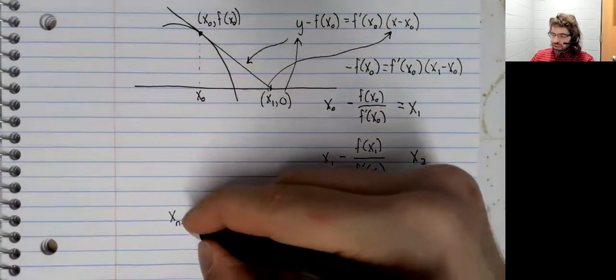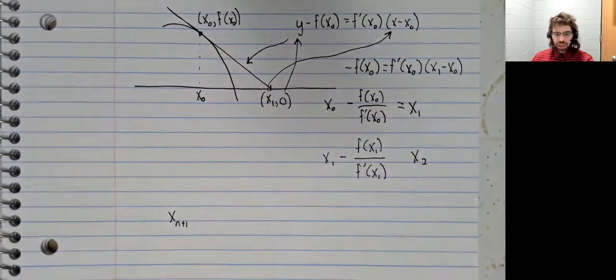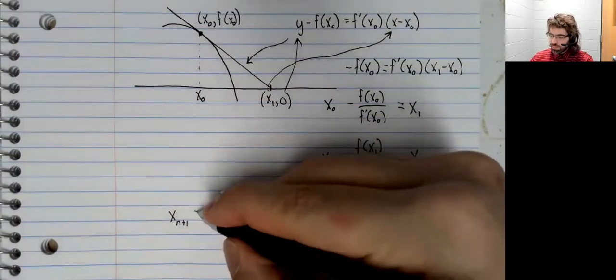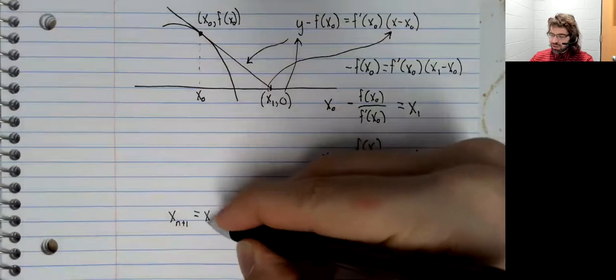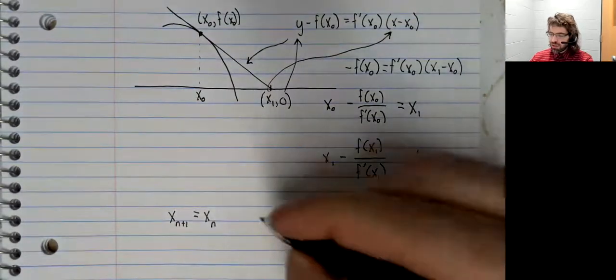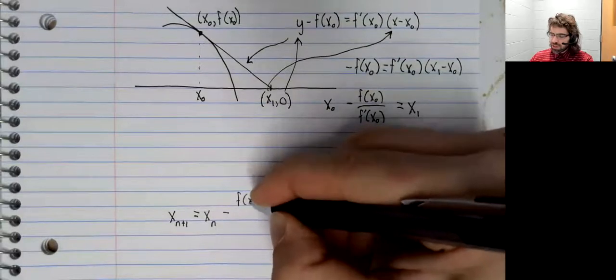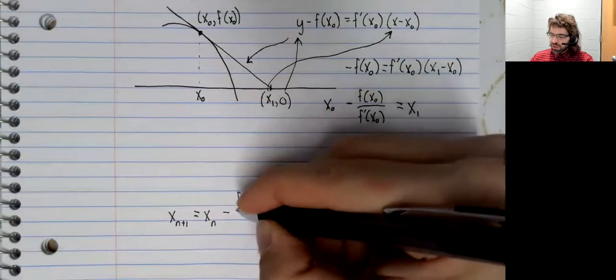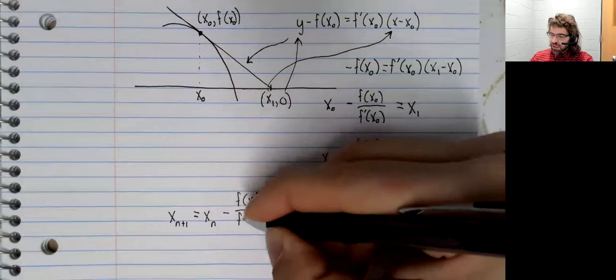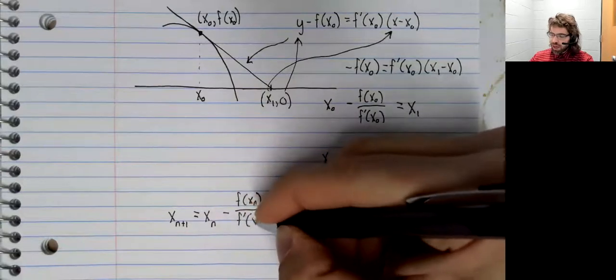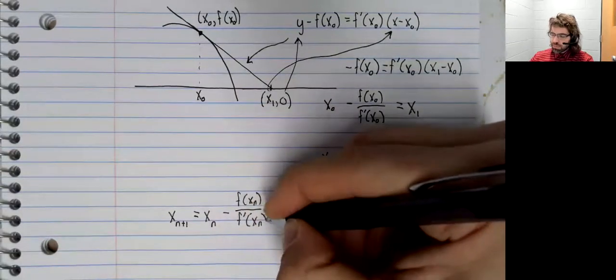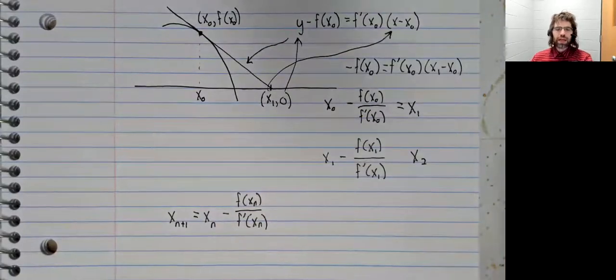And in general, X sub N plus 1 is X sub N minus f of X sub N divided by f prime of X sub N.